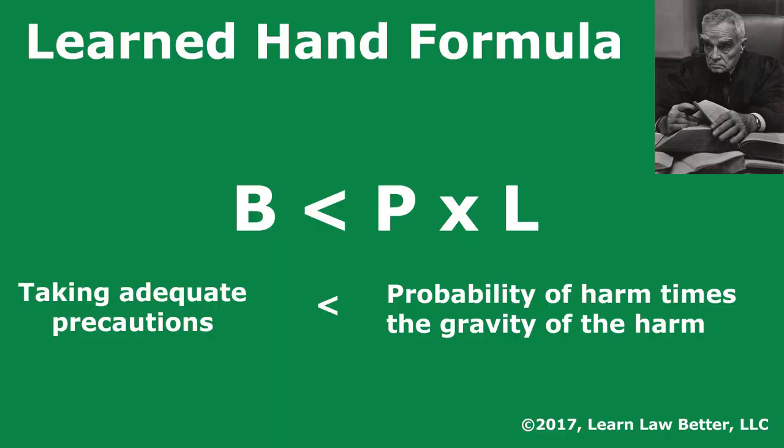In negligence trials, when the standard of care is the reasonably prudent person, juries use their common sense in deciding if the defendant was unreasonable. Learned Hand was uncomfortable with using this unstructured approach, so he decided to explain unreasonableness with the formula B is less than P times L, where B is the burden of taking adequate precautions, P is the probability of harm, and L is the gravity of the harm.